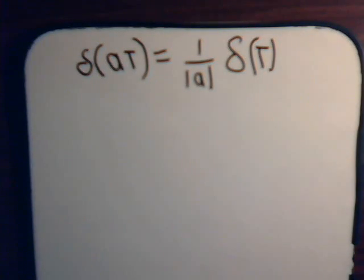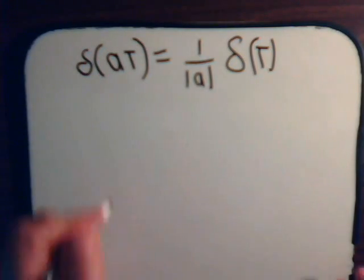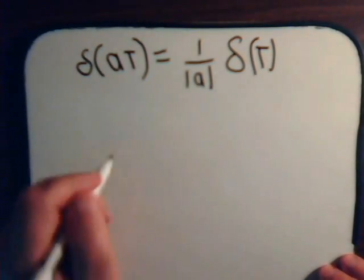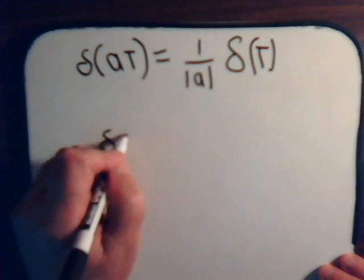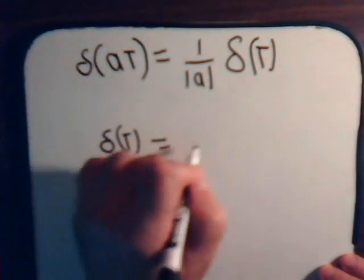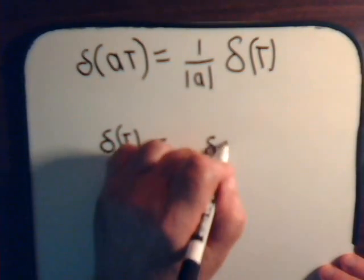So, the fact that the Dirac Delta function is an even function just falls out from this. If a is plus 1, we just have this.